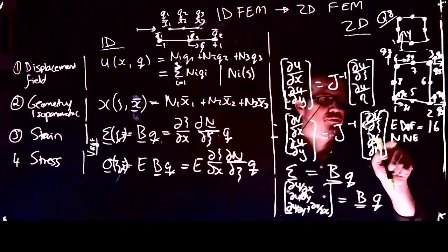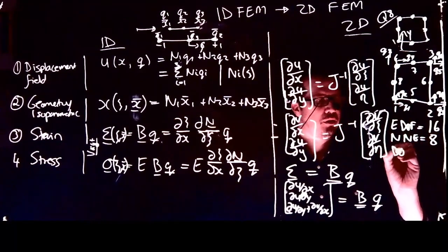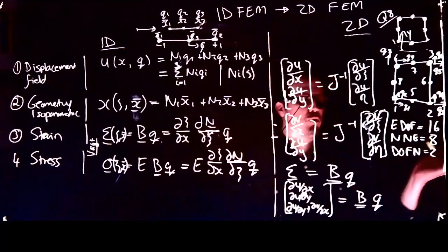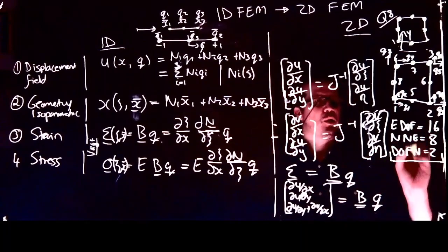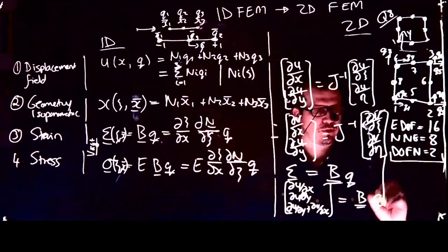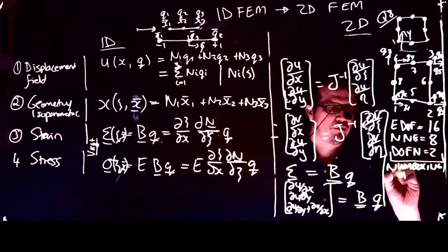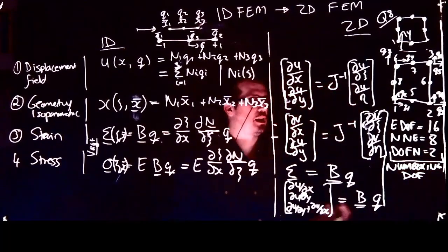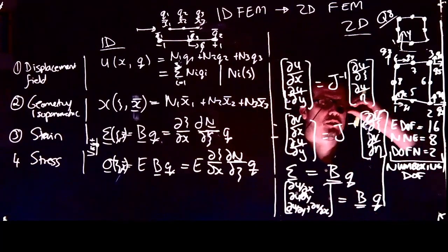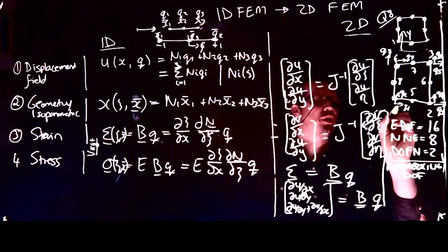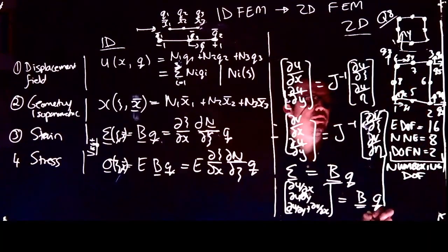The number of nodes of the element is eight, and the degrees of freedom per node is two because it's a 2D problem. Multiplying these gives the element degrees of freedom. What I want to look at now is the degree of freedom number in terms of the local nodal numbering — this is a classical finite element notion.